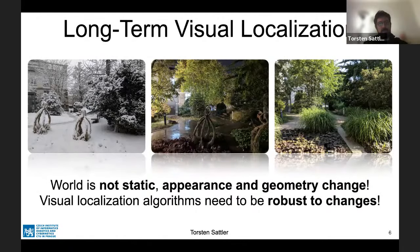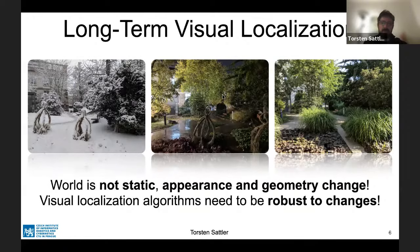In this talk I want to address long-term visual localization, which is essentially the problem that the world is not static but changes dynamically over time. Here you see three images taken at the same place in front of my former office at ETH — one in winter, one in autumn, and one in spring. Appearance changes quite drastically with seasons, weather, and time of year. For example, these bushes are tied into knots in winter and autumn. Appearance and geometry can change over time, and visual localization algorithms should be robust against these changes to be practically relevant.